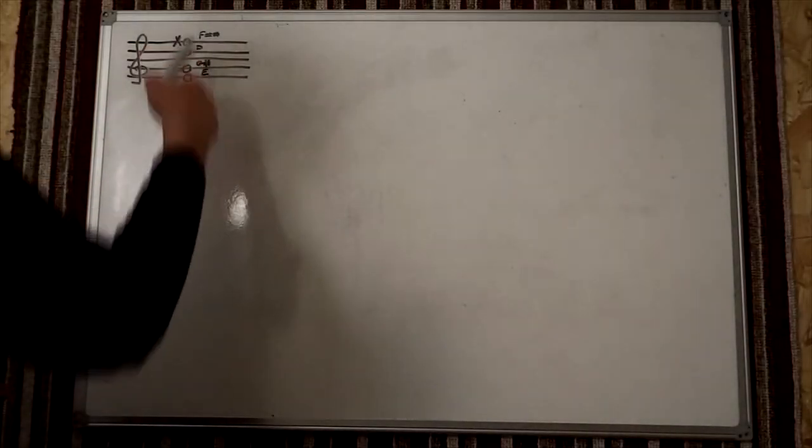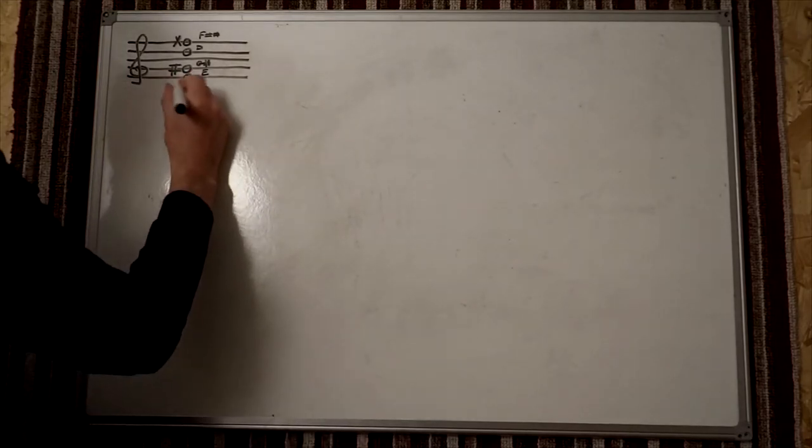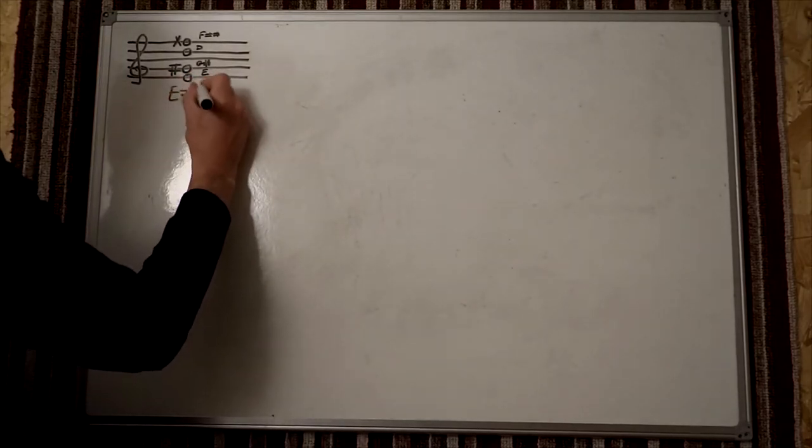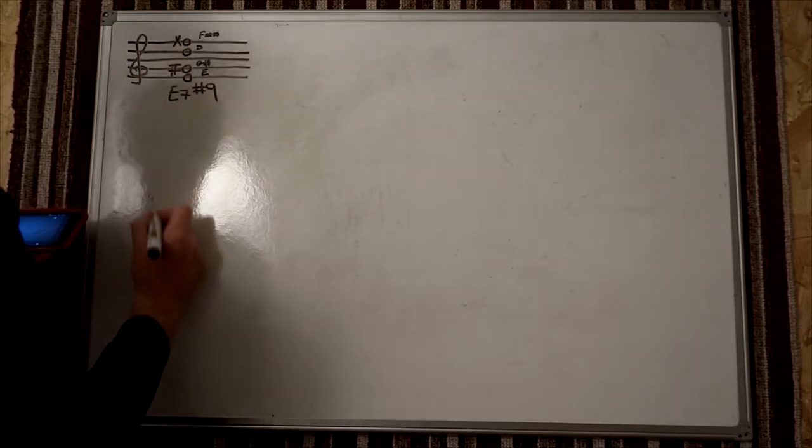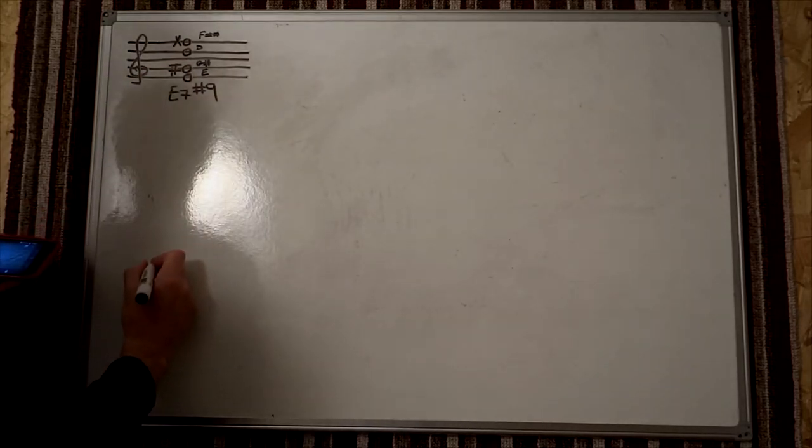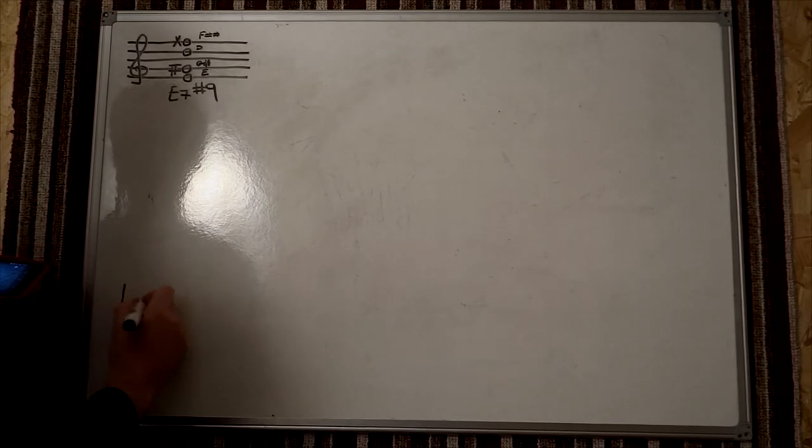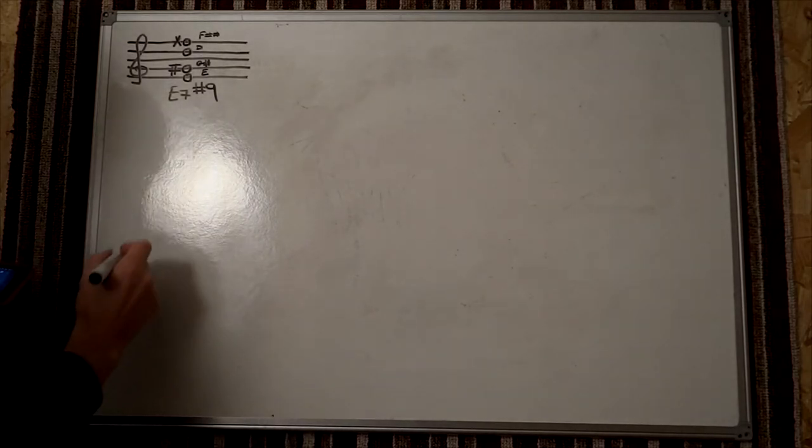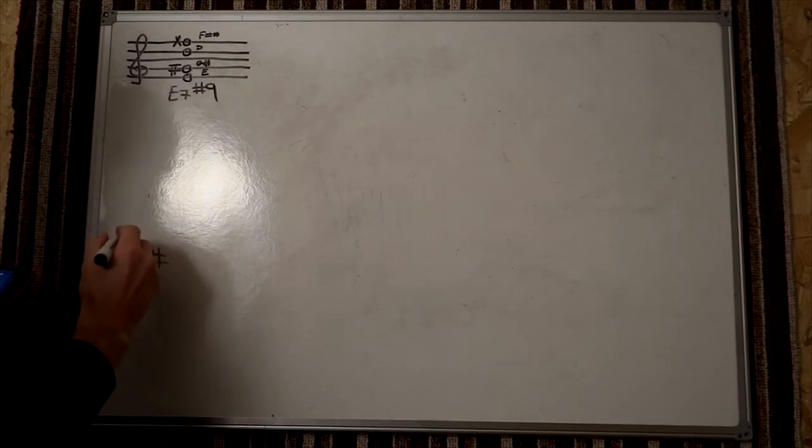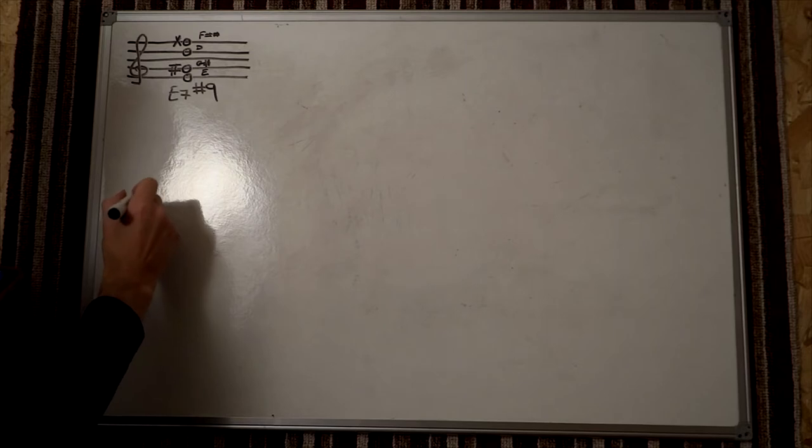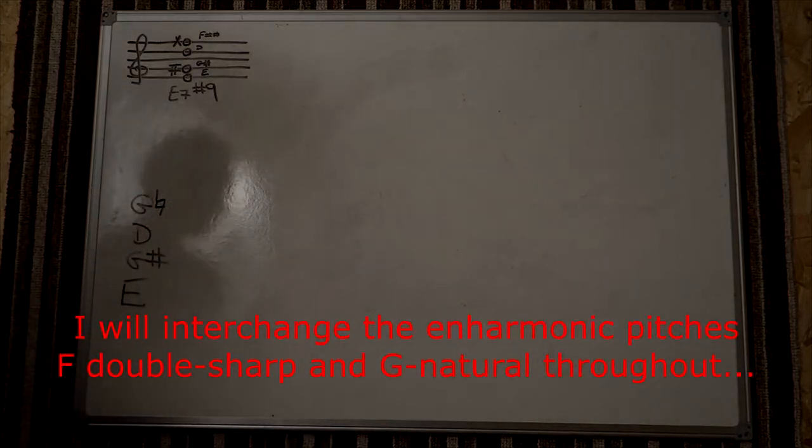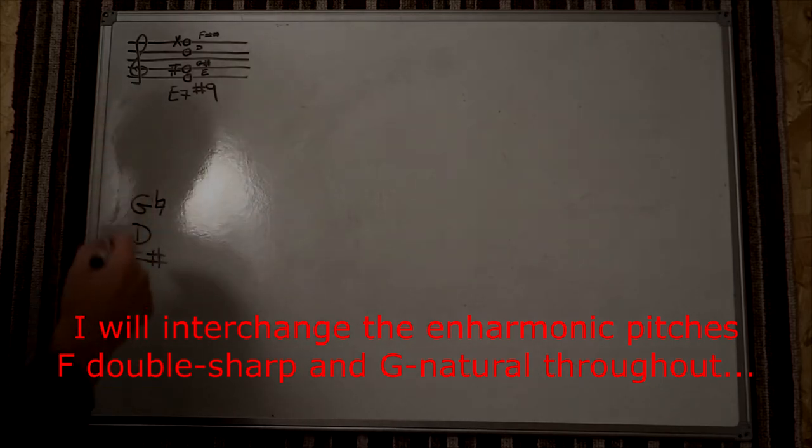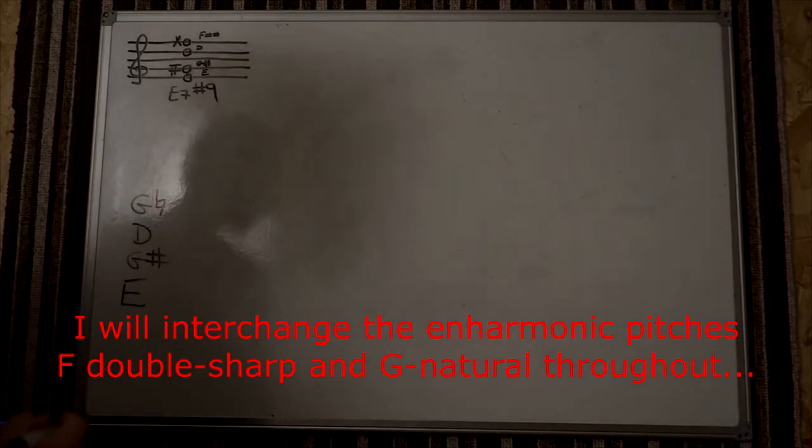So we now have our E7-sharp-9 up here. We've got the notes: E, G-sharp, D, and our effective G-natural. We're going to call it G-natural just in this instance to make it easier.